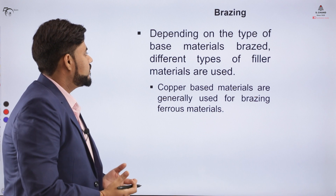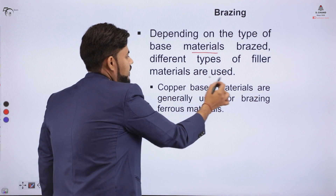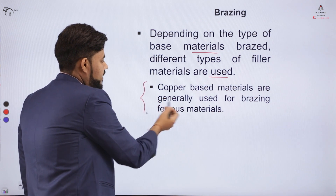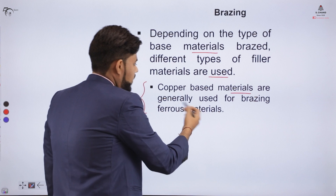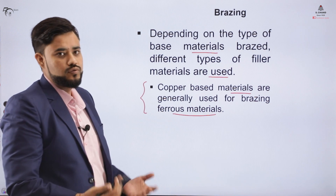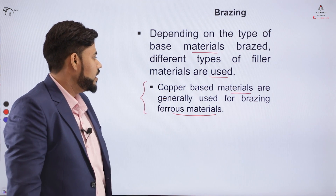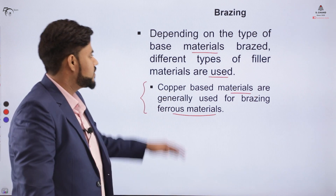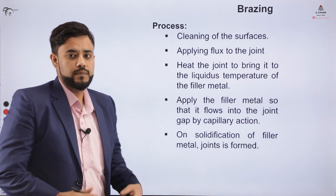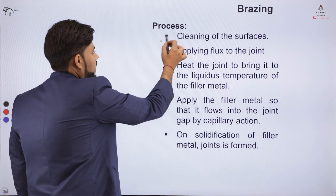Depending on the type of material you want to braze, we use different types of filler material. For example, a copper-based filler material is generally used for brazing ferrous materials — in order to braze ferrous material we majorly use copper-based materials. This is just one example of filler material selection.